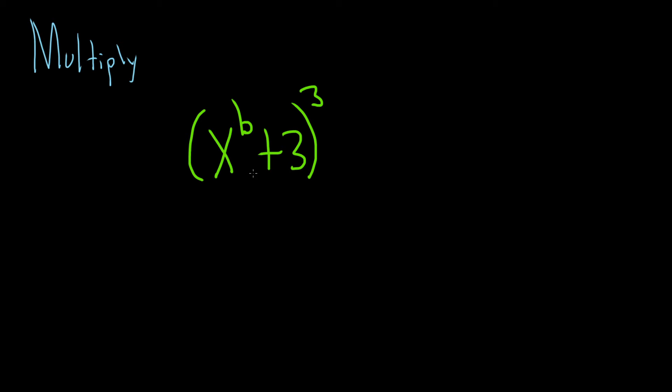So to do this, because this is a 3, one way is to just write it 3 times. So this is x to the b plus 3 times x to the b plus 3 times x to the b plus 3.